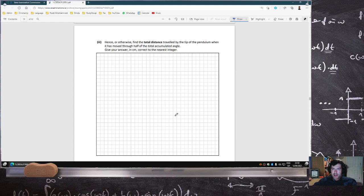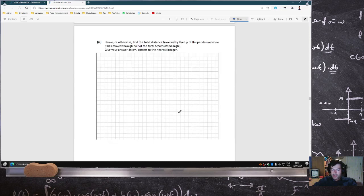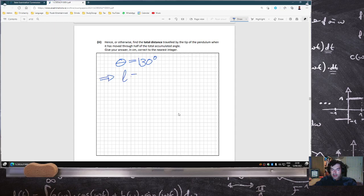Hence, or otherwise find the total distance traveled by the tip of the pendulum when it has moved to half of the total accumulated angle. So if theta is 130 degrees, then that means the arc length would be R theta, which would be 100 times 130, but the angle needs to be in radians, so it's 130 over 180 times pi. So that would be 227 centimeters.